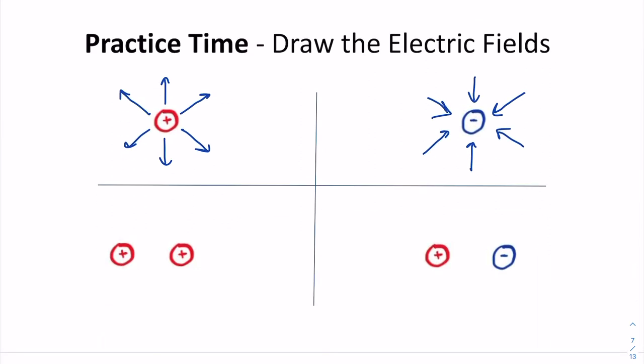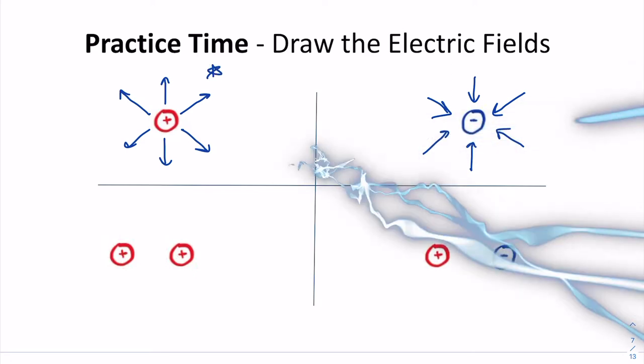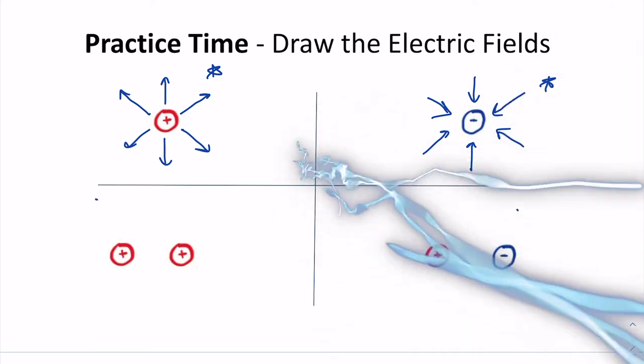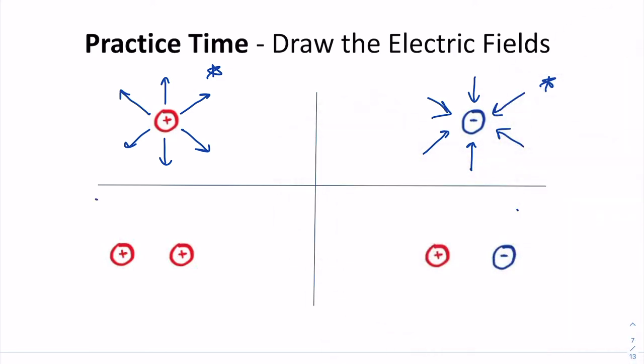Okay, let's do some practice. So here we have some electric fields as a result of charged particles. Outwards from positives are how we draw our electric field, inwards towards negatives. So go ahead and try these two. Draw the outwards arrows from our positives, inwards towards negatives. Give it an attempt.